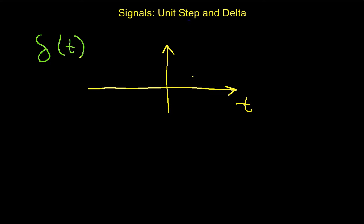Our delta function, we draw just as this fat arrow located at 0. So this is delta of t.